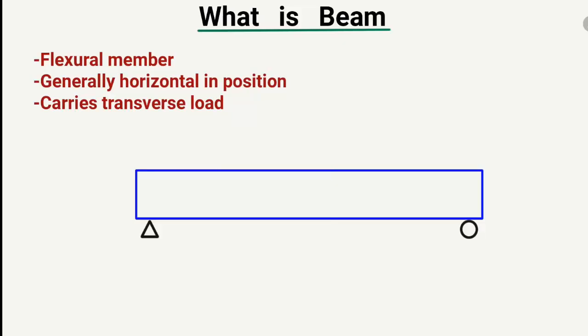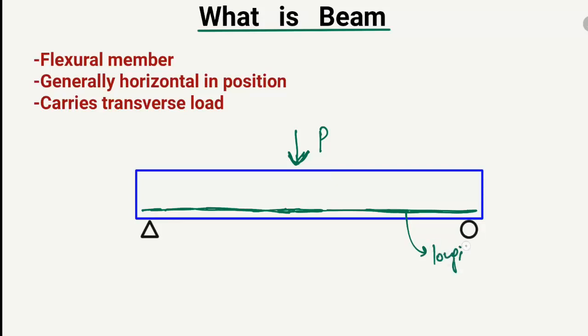Beams always carry reinforcement in the longitudinal direction. When a load P acts on the beam it bends, and to resist the bending stresses we provide reinforcement in the tension zone — this is called tension reinforcement. It is also referred to as longitudinal reinforcement, tensile reinforcement, or horizontal reinforcement, because it runs along the longitudinal direction of the beam.